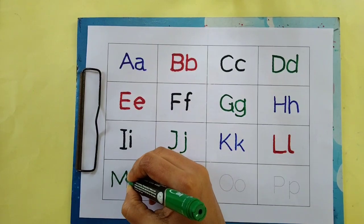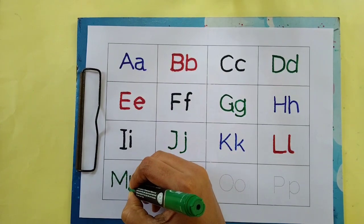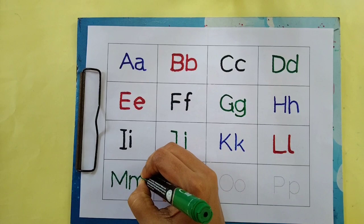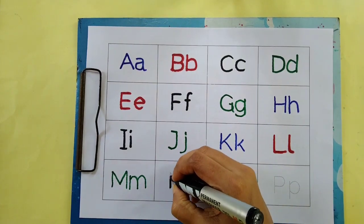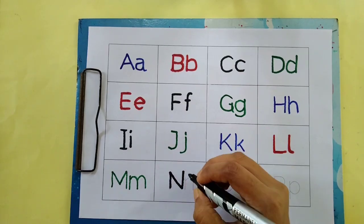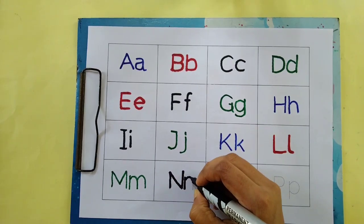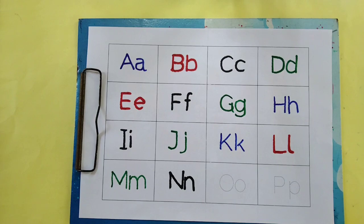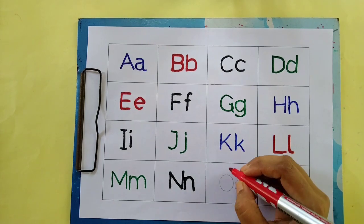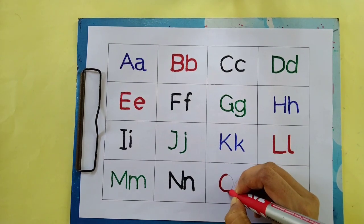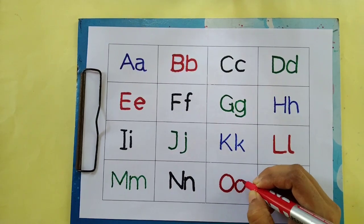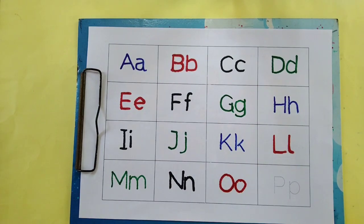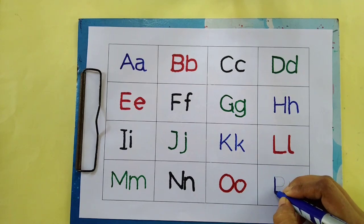M, M for mango, M for mango black color. N, N for net, N for net red color. O, O for orange, O for orange blue color.